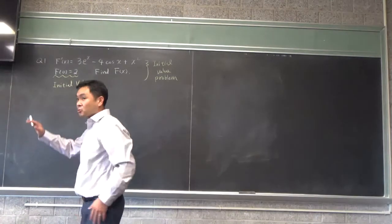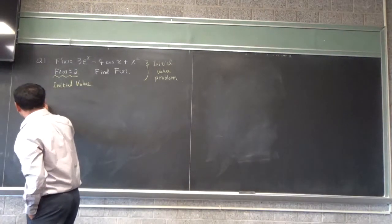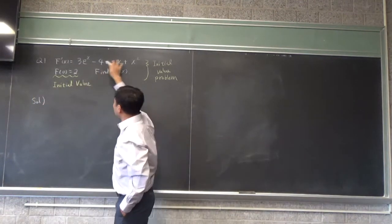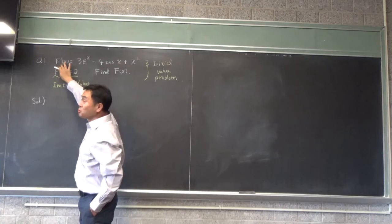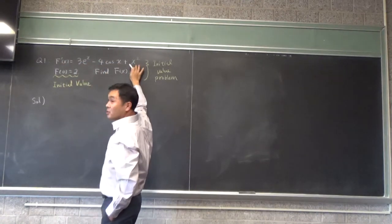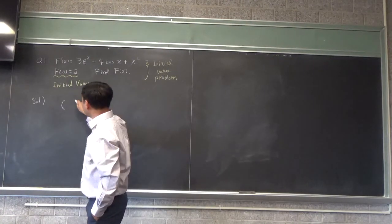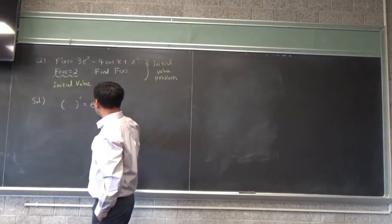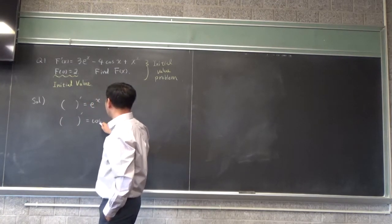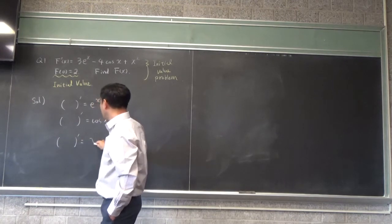Let's try to just gradually build up the antiderivative, so let's write down the solution. This is saying that there is a function whose derivative creates e to the x, cosine x, and x squared. So let's think about what differentiates to e to the x, what differentiates to cosine x, and what differentiates to x squared.